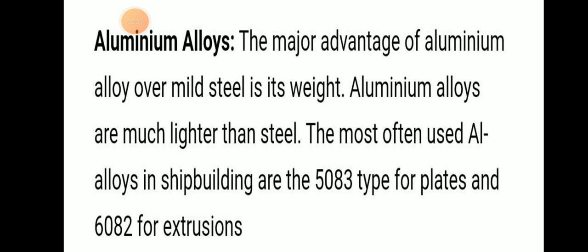Aluminum alloys are also used in shipbuilding. Compared with steel, aluminum alloys have the advantage of being much lighter in weight. The most commonly used aluminum alloys in shipbuilding are the 5083 type for plates and 6082 for extrusions.